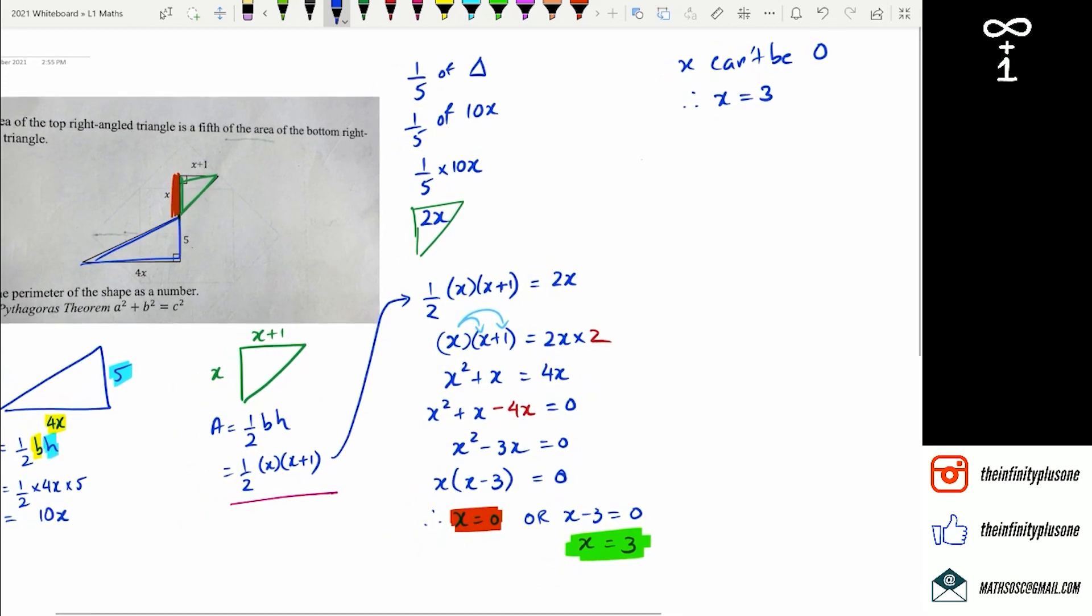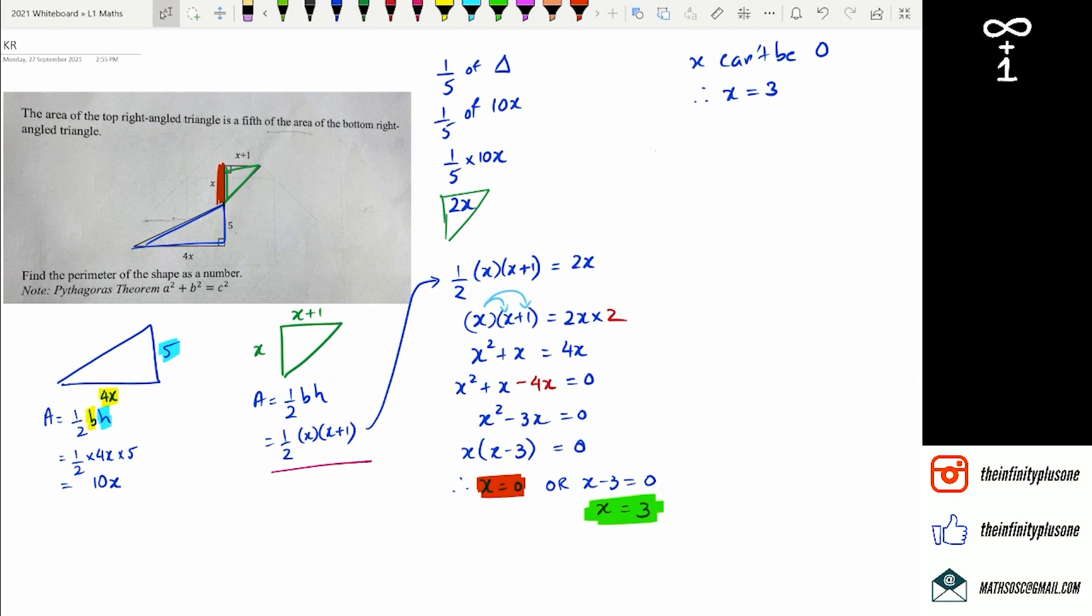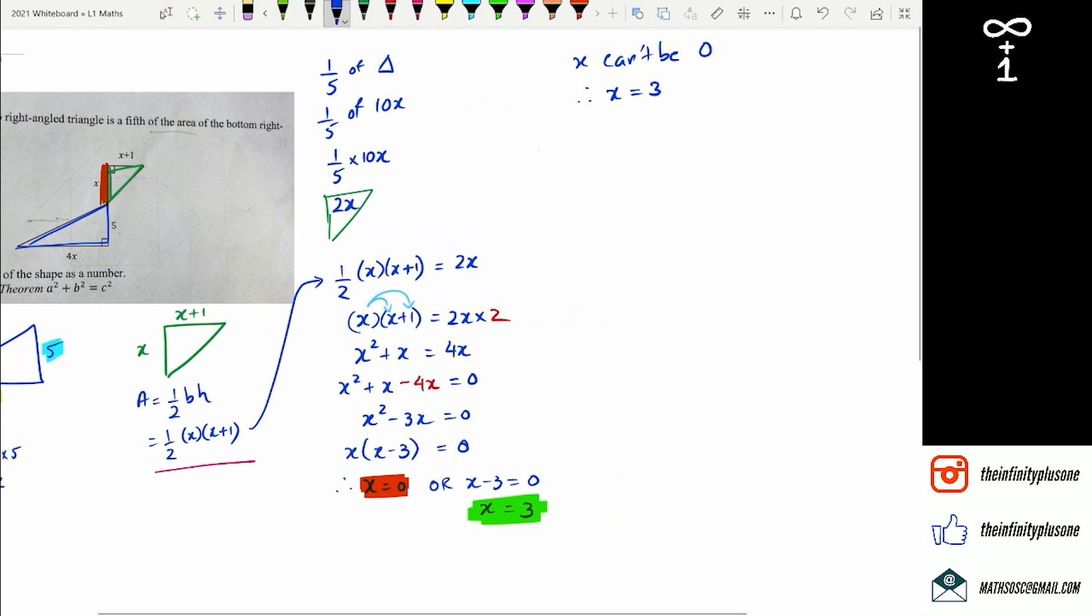Now, once we've got that, we're actually asked to find the perimeter of this shape as a number. So what I'm going to do is I'm going to redraw this triangle. There's my first part, which is the blue. And then I've got my green triangle there.